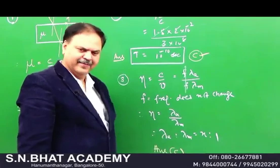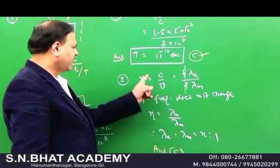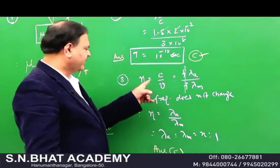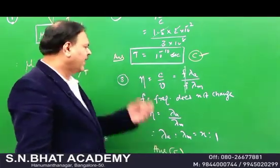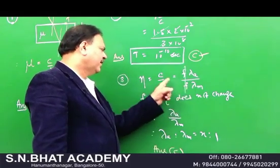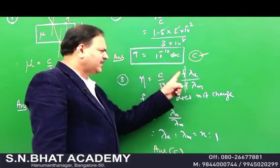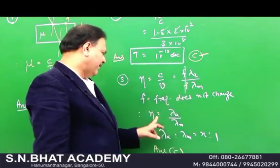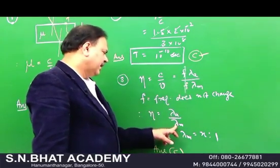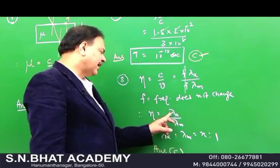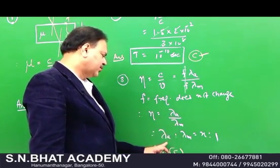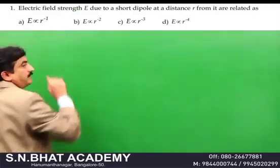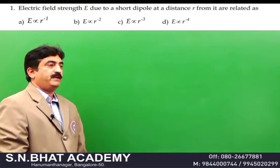The key concept here: absolute refractive index applies when light passes from air into the medium. Since v = fλ and frequency cancels, n = λ_air / λ_medium. The ratio of wavelength in air to wavelength in medium is n : 1, so the answer is confirmed as option B (or C depending on option ordering).